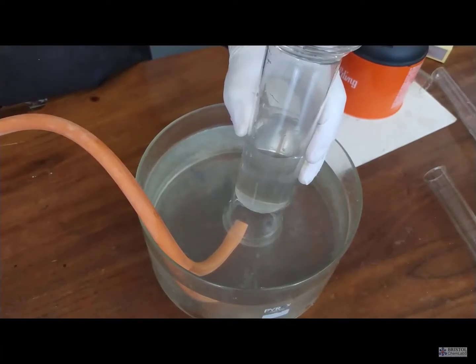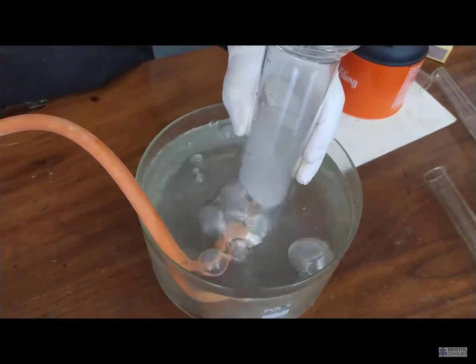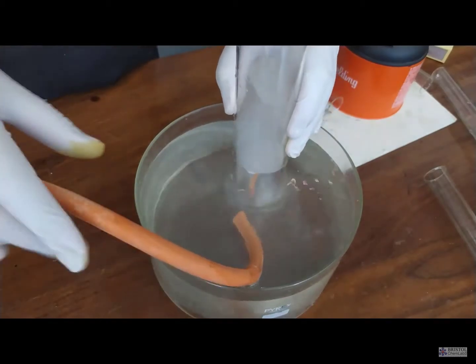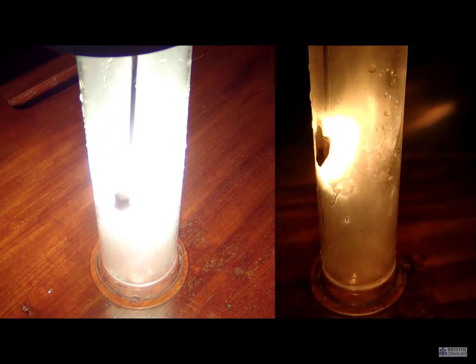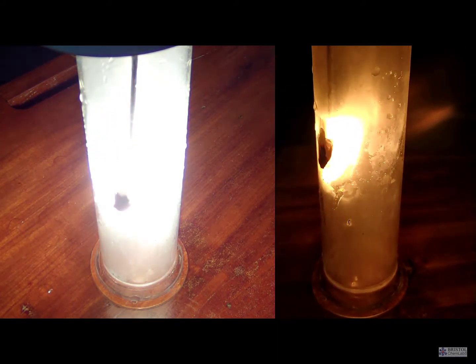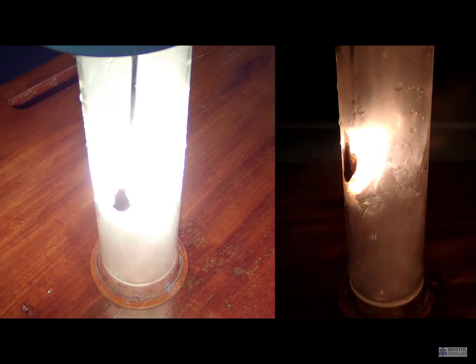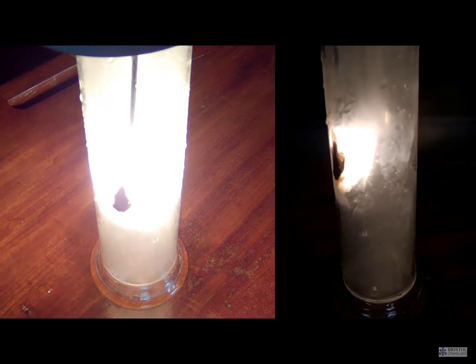Once you have your gas jar of oxygen filled, typically with a gas jar lid, although we didn't have one to hand here and had to make do with a large watch glass, that gas jar lid can be greased to make it more airtight, particularly for longer term storage of oxygen by the technical staff prior to the teacher demonstration.